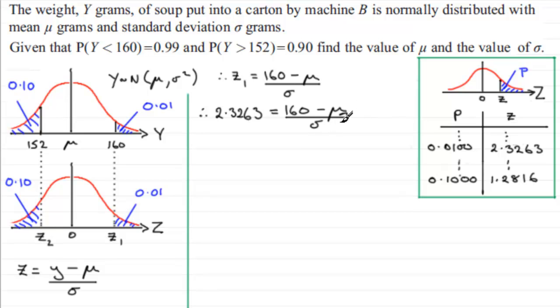Now I'm going to prepare this for simultaneous equations. I'm going to multiply both sides by sigma. We always tend to do that in questions like this. So we're going to have 2.3263 sigma equals 160 minus mu. And I'll call that equation 1.